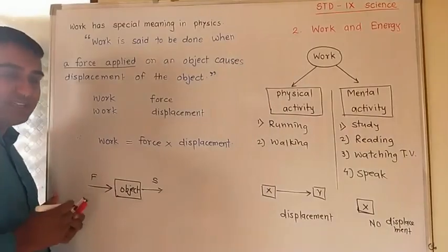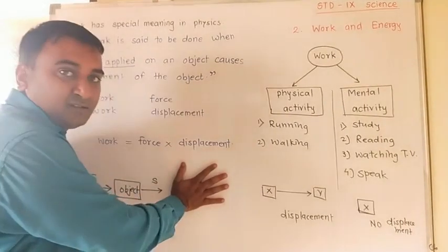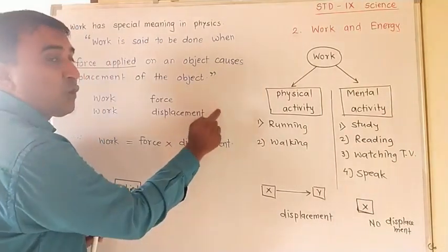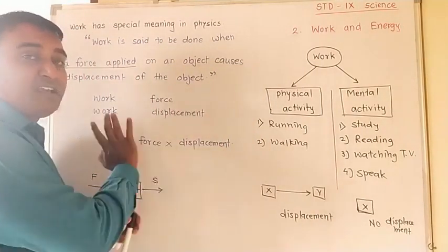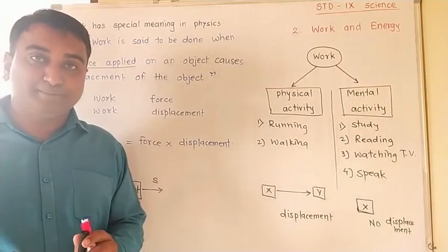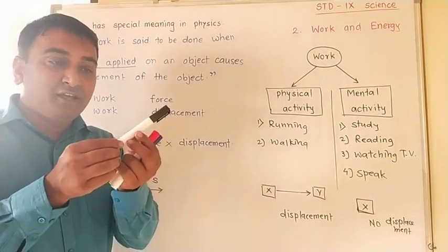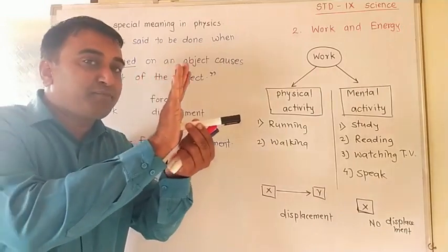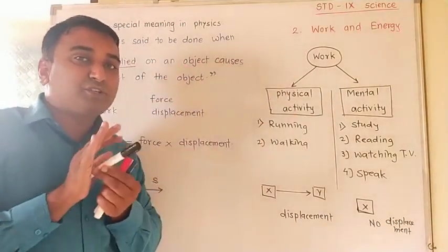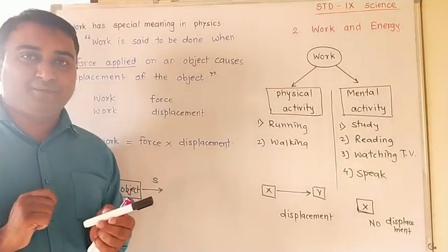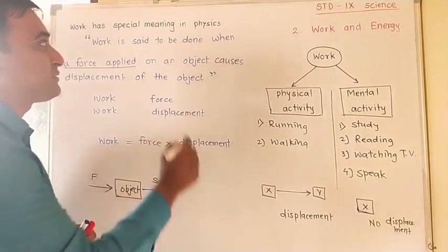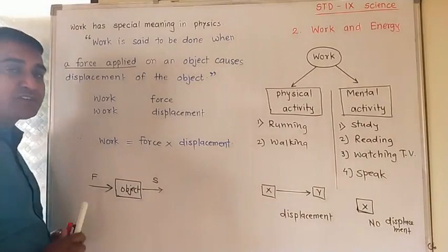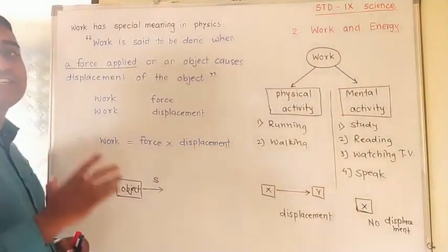If displacement is not there — for example, I am pushing this board backward. Have I applied force? Definitely yes. But because of my force there is no displacement of that board. So in physics this is not work done. But if I apply force on a pen, the pen moves — there is a displacement, a change in position. In physics, that is work done. So work is said to be done when a force applied on an object causes the displacement of that object.